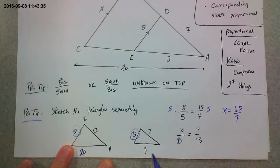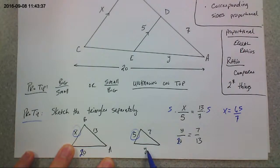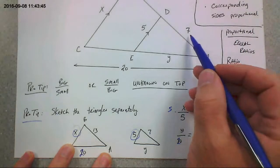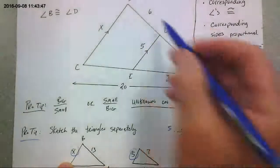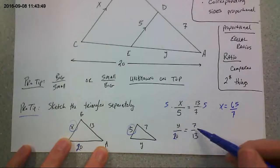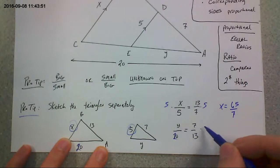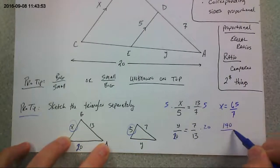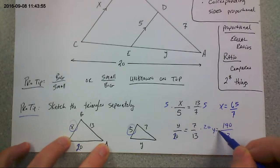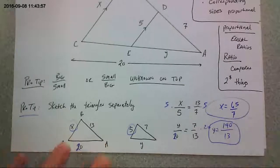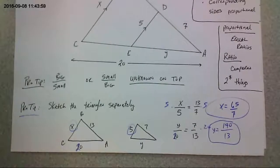Now here, I'm gonna solve for Y. Y is on the small triangle. So I'm gonna put the Y on top which means I have to make my ratio so the small portion, the small triangle is on top of the big one. So Y over 20 is equal to 7 over 13. All I gotta do is multiply both sides by 20. 140 over 13. I have to plug that in a calculator, get a decimal, whatever I need to do.